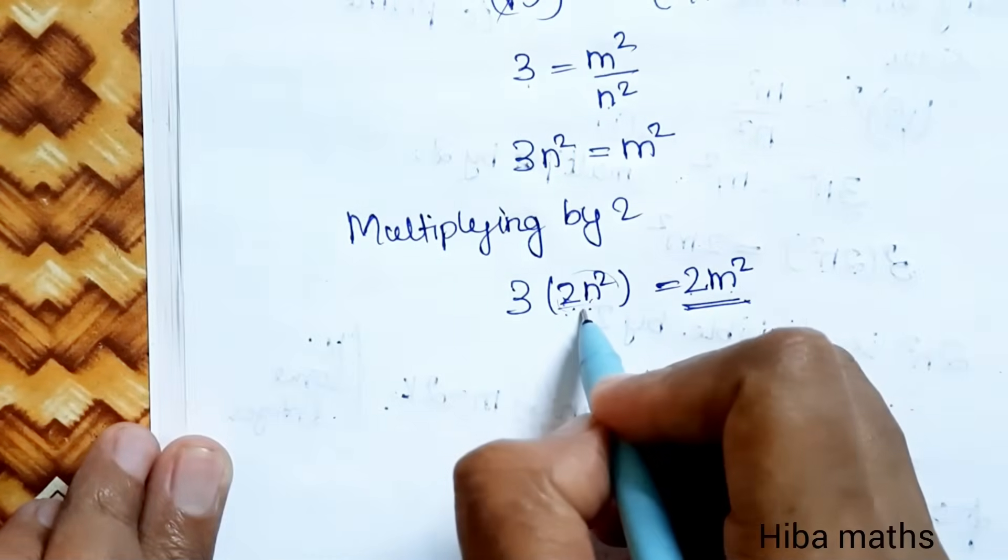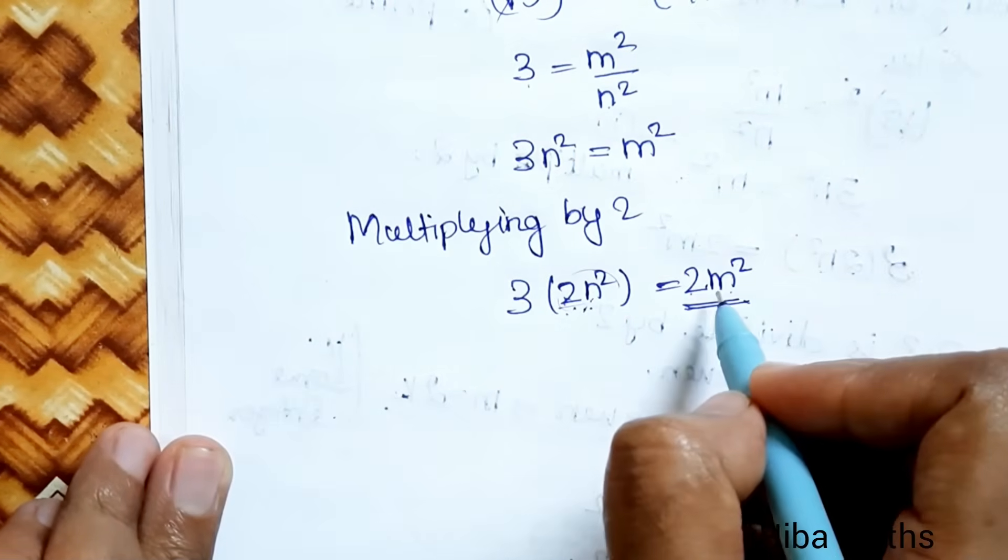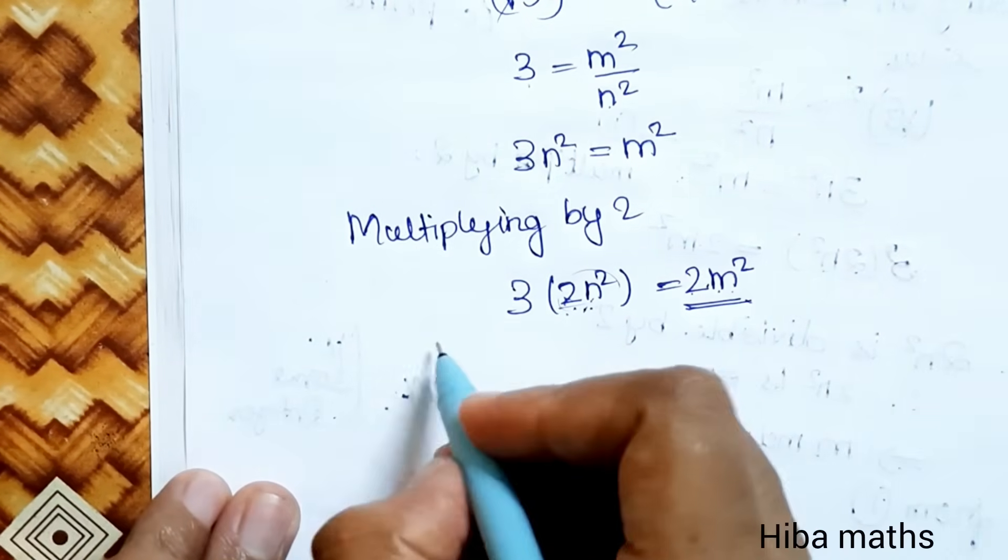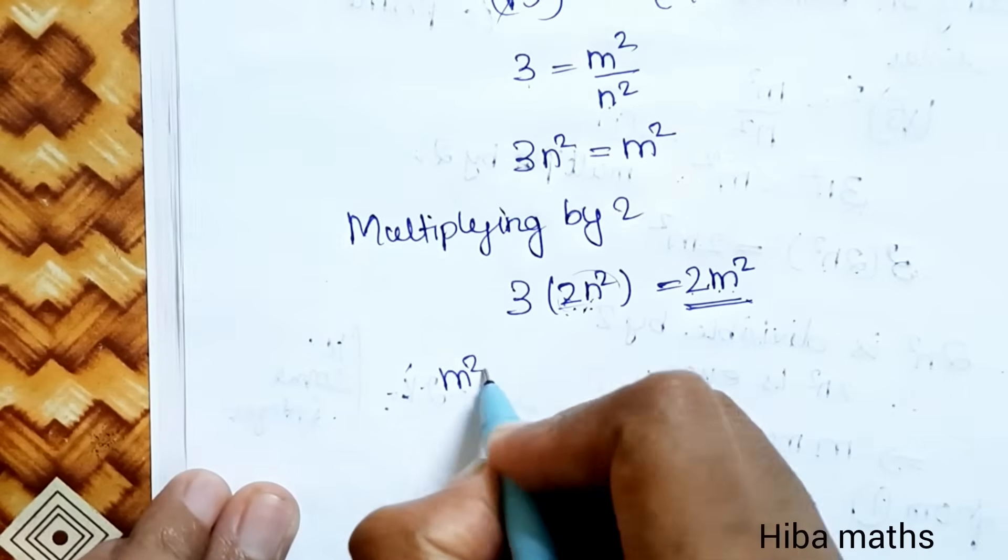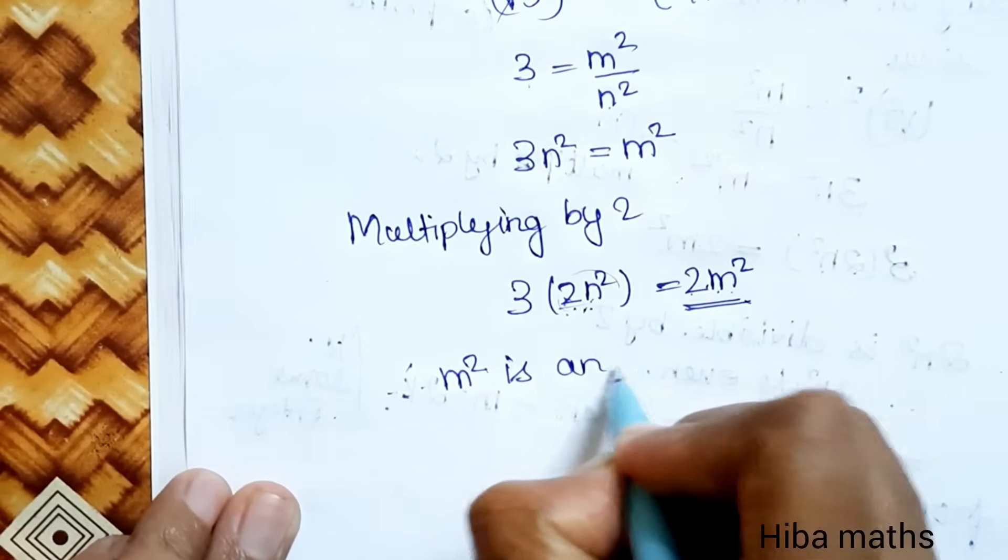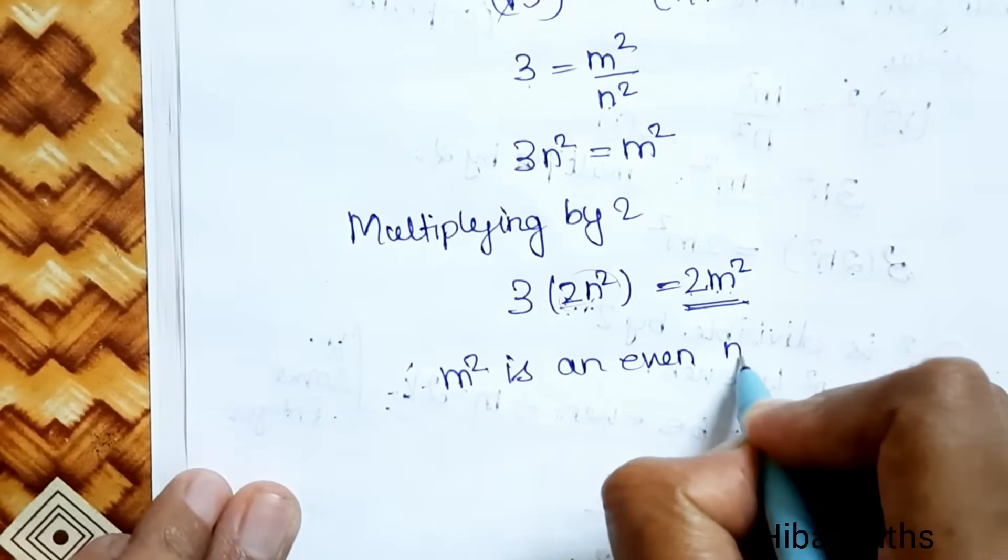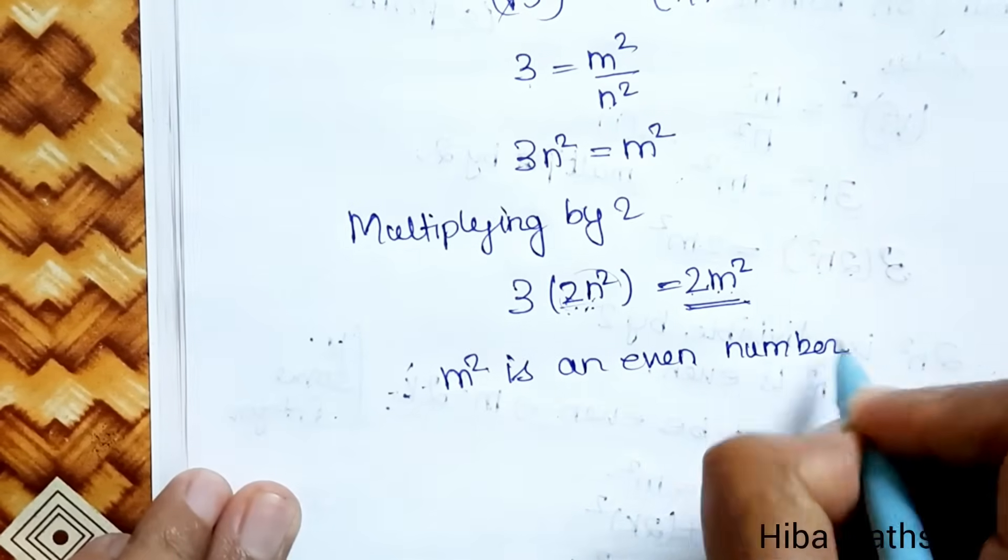So, 2N square is even number. This is even number. M square is even number. Therefore, M square is an even number.